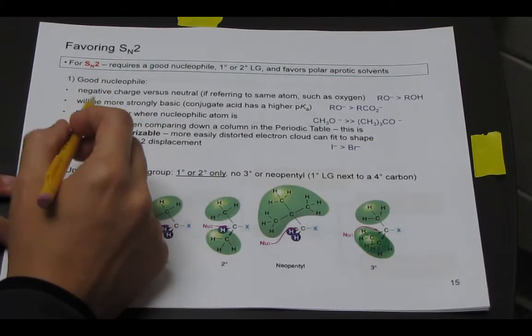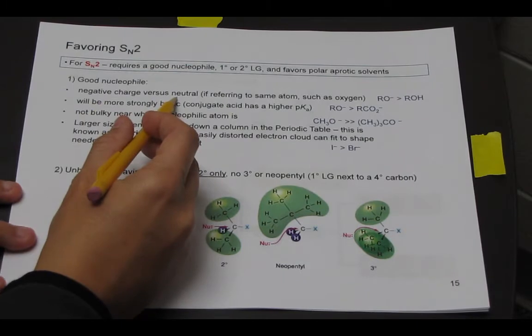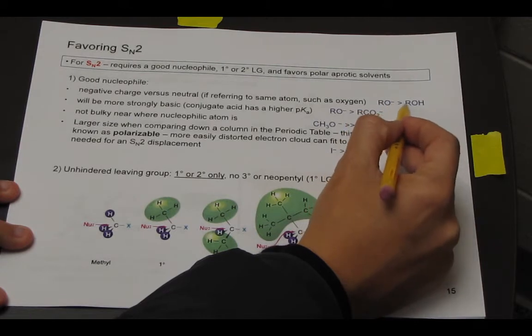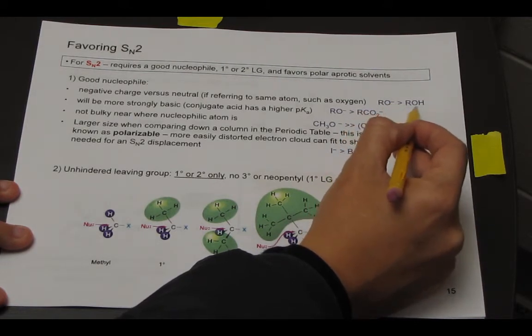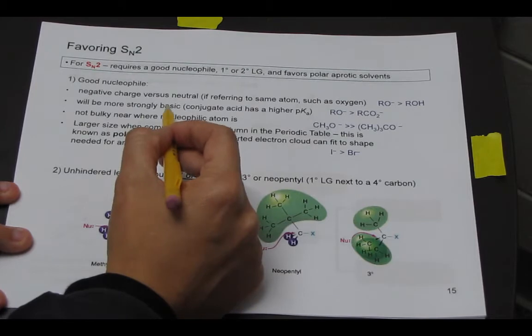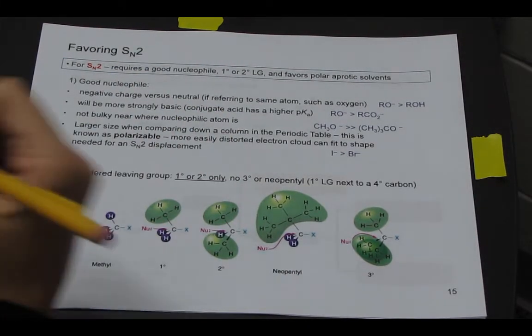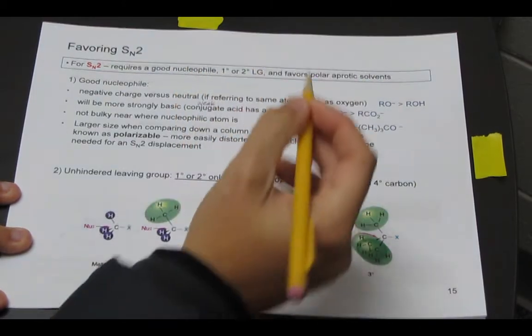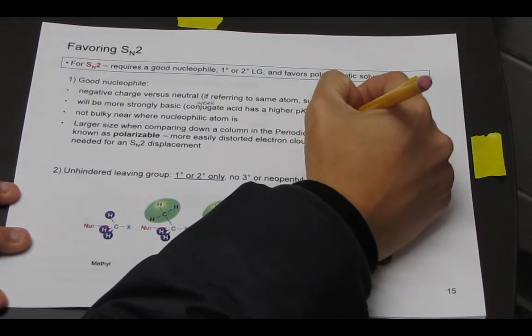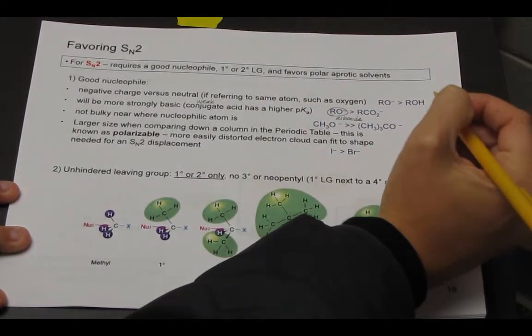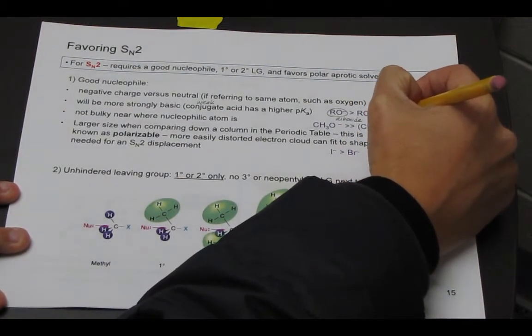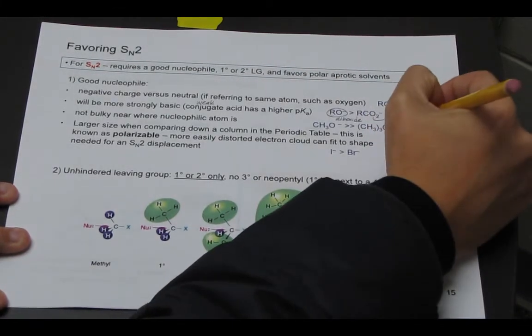So if we focus on the nucleophile, we prefer to have a negative charge versus neutral, if we're talking about the same atom. And so for instance, we would rather RO minus than ROH, because the negative charge is favored over neutral. We want it to be basic. And remember that a strong base has a weak conjugate acid, because it's a strong, weak relationship. And so the RO minus, which we call an alkoxide, is a stronger base than the negative charge on this, which is basically a carboxylic acid anion, or called acetate.